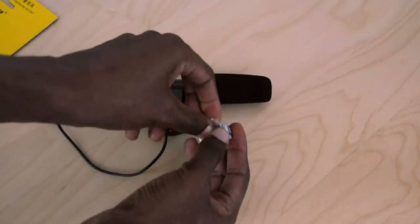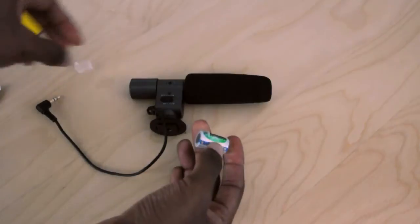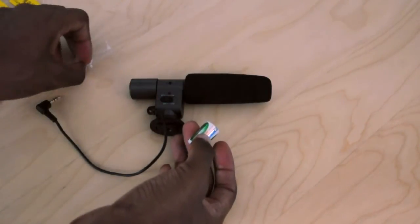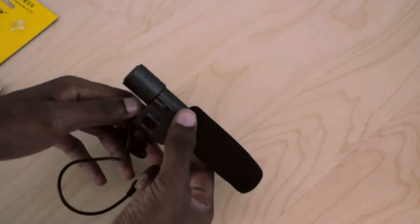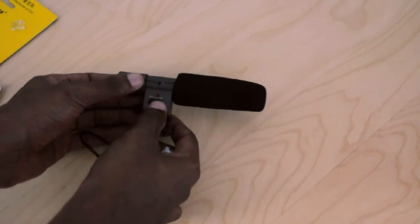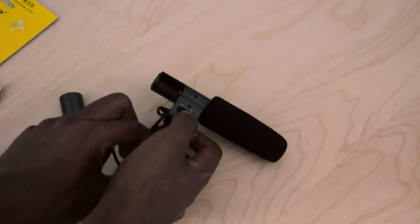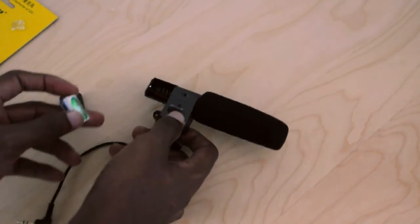Then you want to grab your battery. Go ahead and remove the packaging from that. Want to take off the battery cover on here. Should be on the same side as the on-off switch. Just go ahead and throw that in there.